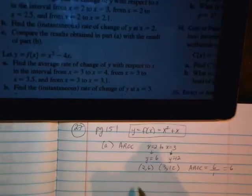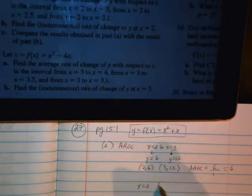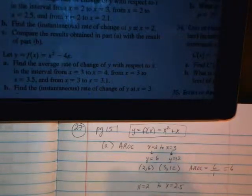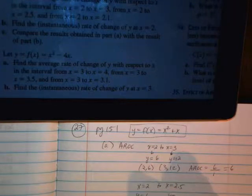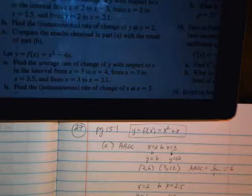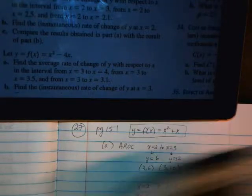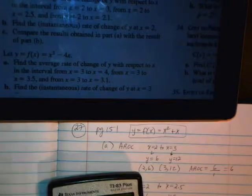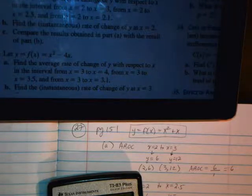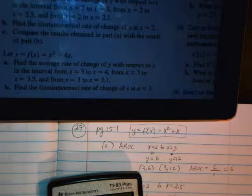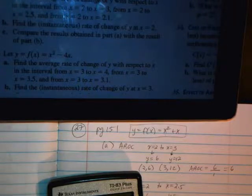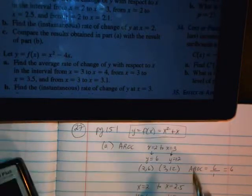The next interval given in the problem is from x equals 2 to 2.5. So you need to find the y value again, which we know is 6. But over here, if you find y, 2.5 squared is 6.25. You could save yourself some trouble by going to y equals and typing in this function, and then go to table, type in 2.5. You get 8.75.